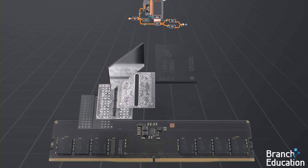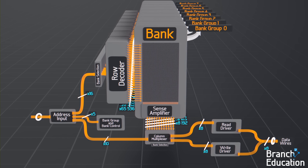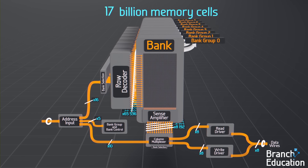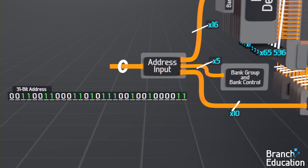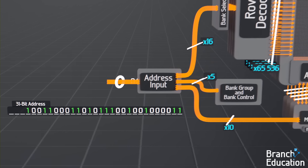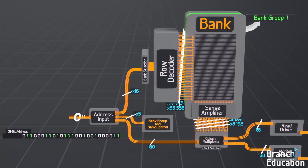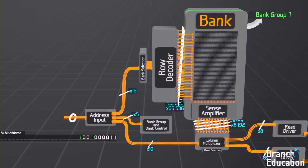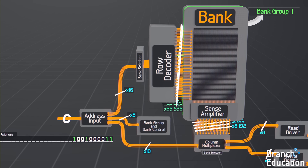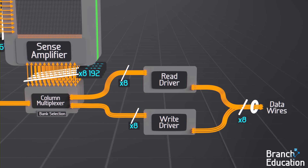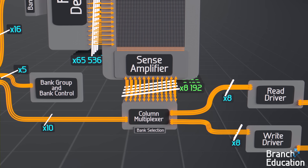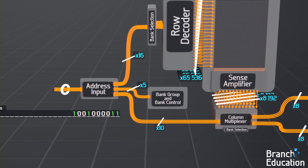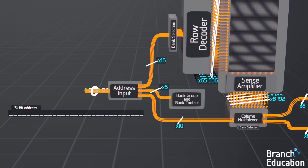Within each bank is a massive array — 65,536 memory cells tall by 8,192 cells across — essentially rows and columns in a grid with tens of thousands of wires and supporting circuitry running outside each bank. We're going to transition to a functional diagram and then reorganize the banks and bank groups. In order to access 17 billion memory cells, we need a 31-bit address. Three bits are used to select the appropriate bank group, then two bits to select the bank. Next, 16 bits of the address are used to determine the exact row out of 65,000.